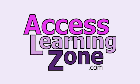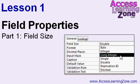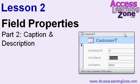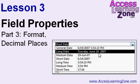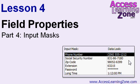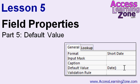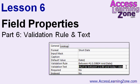Now let's take a closer look at exactly what's covered in today's class. In lesson one, we're going to begin looking at field properties, starting with field size. In lesson two, we'll talk about the caption field property and the description of a field. In lesson three, we're going to learn about the format and decimal places properties. In lesson four, we're going to learn about input masks. In lesson five, we'll learn about the default value property. In lesson six, we're going to learn about the validation rule and validation text properties.